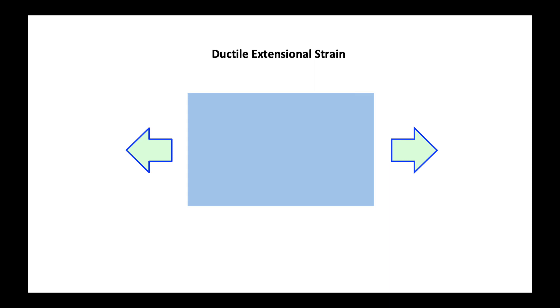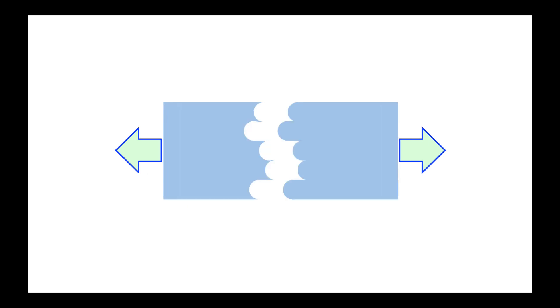Ductile materials experience extensional strain in a process known as necking down which looks like this. And then it breaks in a way that we have depressions on the left and protrusions on the right. This when it happens is known as ductile failure.